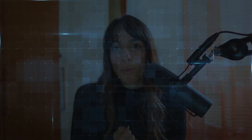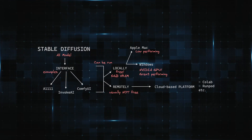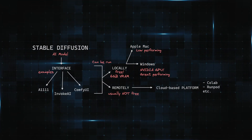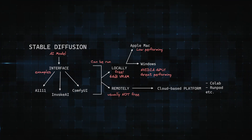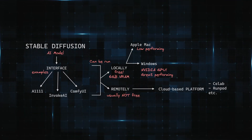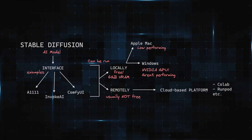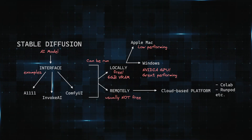However, there are some workarounds to run Stable Diffusion from any computer, even the least powerful. The first option is to use cloud-based platforms that provide users with virtual environments — these are Google Colab, RunPod, PaperSpace, and many others, but I'm going to mention just the most famous ones.